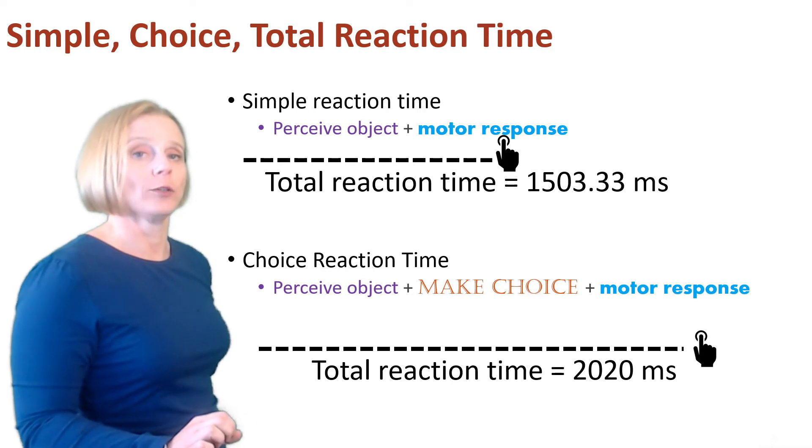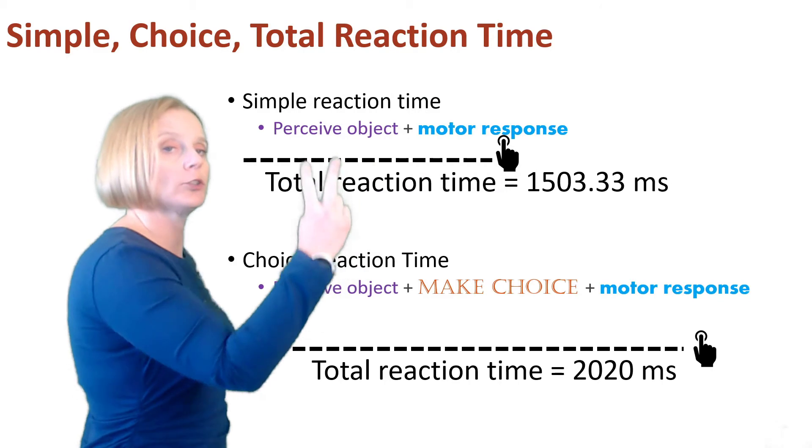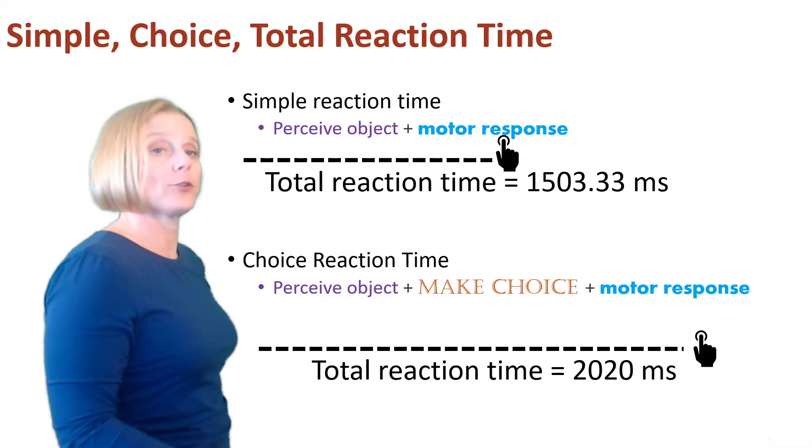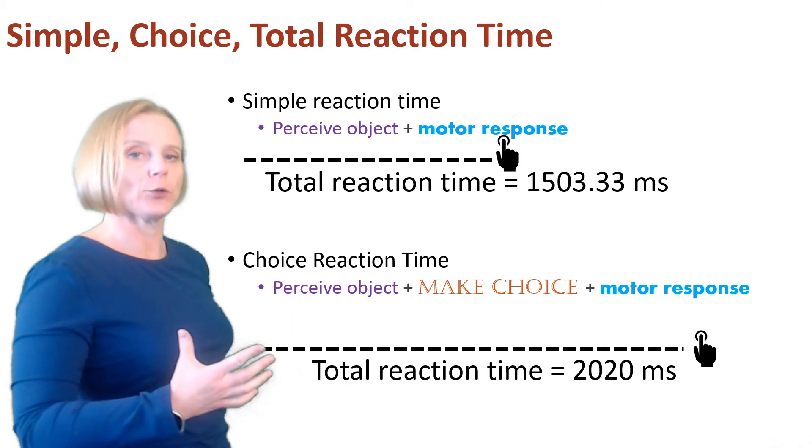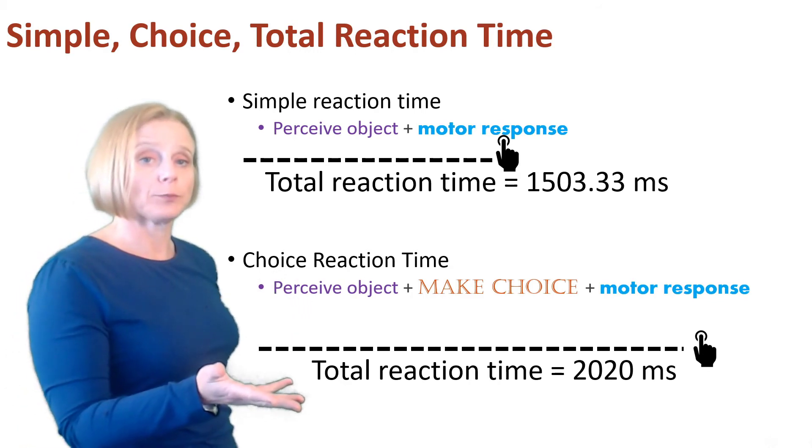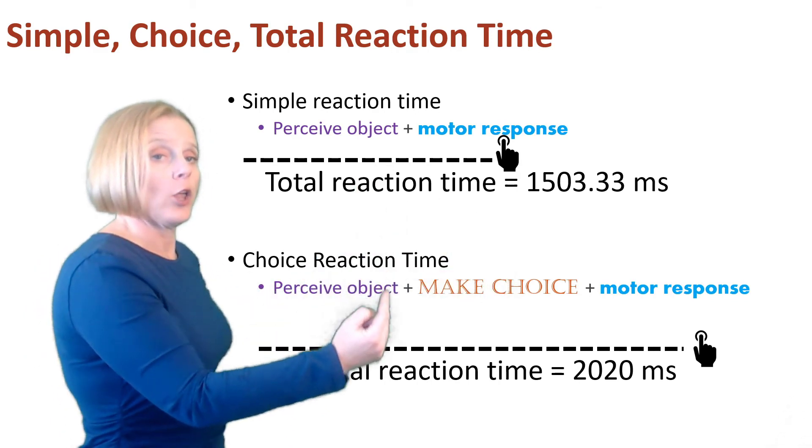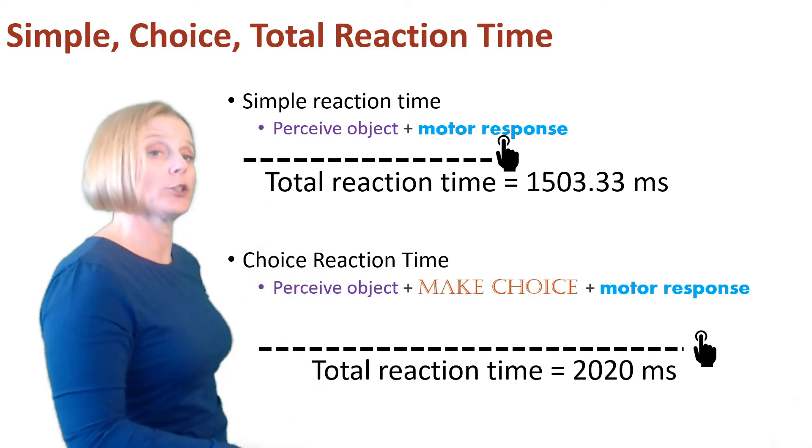How does that work? Well, the simple reaction time task involves the perception of an object plus a motor response. Those two things combined together take 1,503.33 milliseconds. In the choice reaction time task, we have to perceive an object, have that motor response, and make a choice. Those three things combined together take 2,020 milliseconds.